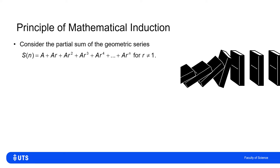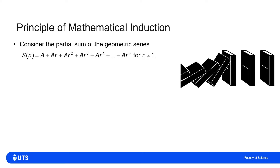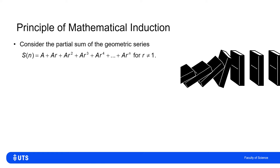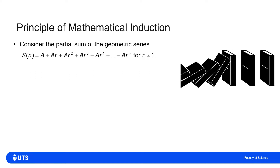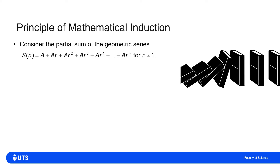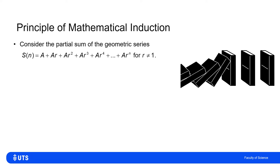We're going to consider the partial sum of the geometric series. A geometric series is one where we're adding consecutive terms such that each term is a common ratio multiplied by the previous term. So we're adding a + ar + ar² + ar³ + ar⁴ + ... + arⁿ, adding up to the nth power.